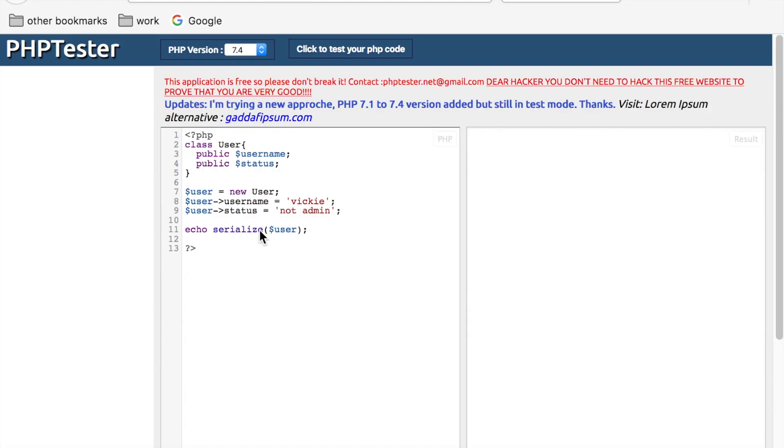For example, this code snippet will serialize the object user. If you run this piece of code, you will get the serialized string that represents the user object.